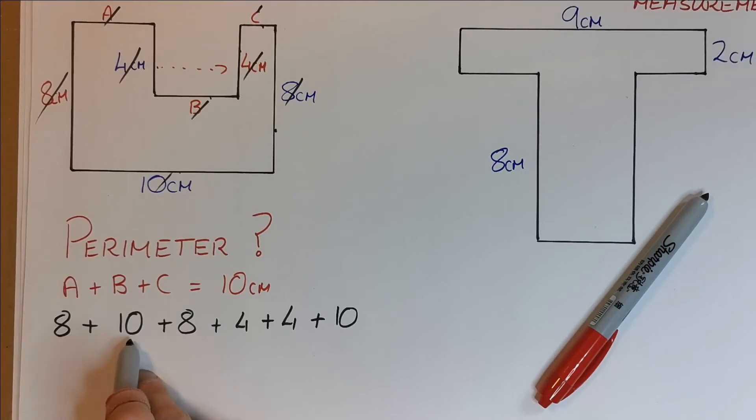Let's add all these together, 8 plus 10 is 18, plus another 8 is 26, and 4 is 30, and 4 is 34, and 10 is 44cm.